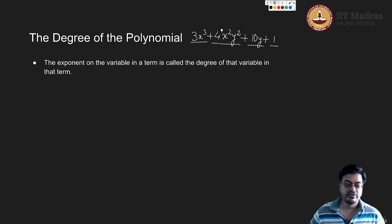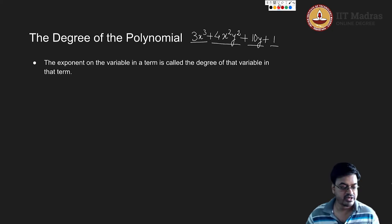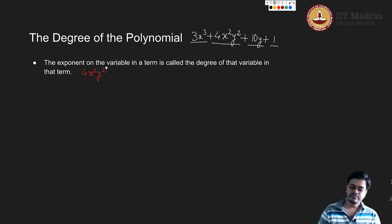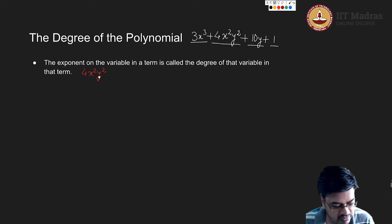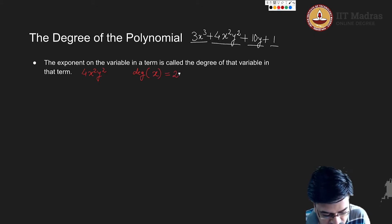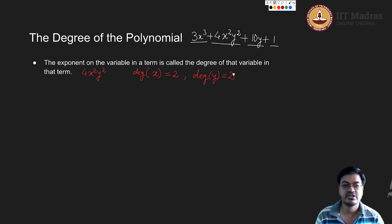The exponent on the variable in a term is called the degree of that variable in that term. For demonstration purposes, let us take the expression 4x²y². In this particular monomial, there are two variables: x and y. The degree of x is 2 and the degree of y is also 2. This is how I will describe the degree of a variable.